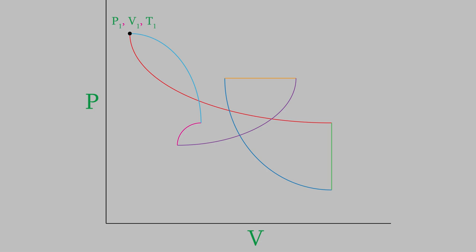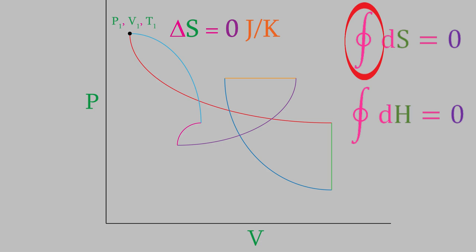In this case, because entropy is a state function, the initial and final states of the system have exactly the same entropy. So delta S equals zero. We can express this using this equation. This symbol means that the integral occurs for a cyclic process, meaning that the initial and final states are identical. A similar equation would be true for all state functions, like enthalpy and energy.